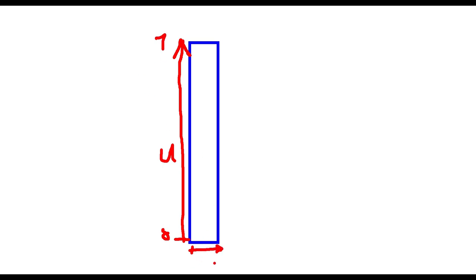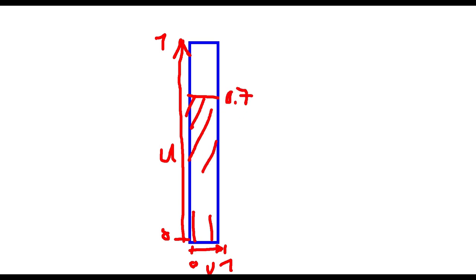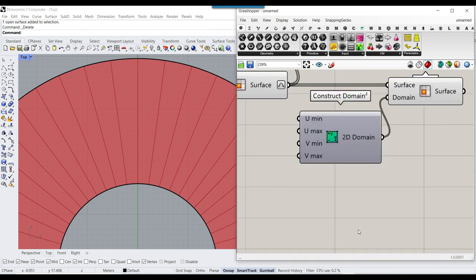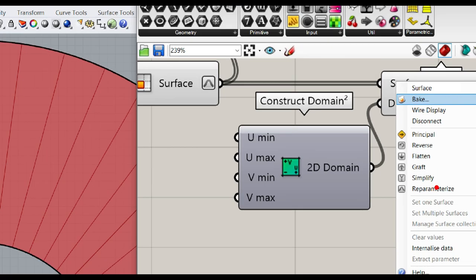What we have to do here is right-click on the surfaces and reparameterize them. We want to normalize the domains so all of them go from 0 to 1 in both U and V. This makes it much easier to control. The U domain is 0 to 1 and the V domain is also 0 to 1. Remember you can reparameterize in the right-click menu or directly on the input — it doesn't really matter.